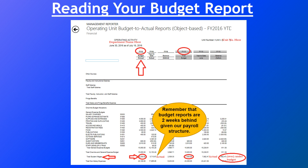Once you click on that link, the Operating Unit Budget to Actual Report comes up. At the bottom, the second to last item is your student wage line — this is your total student wages for the year as well as your actual amount at any given point. The first column is the total budget for the year, and the second column is your actual amount at the time you look at it. Please keep in mind there is a two-week delay on the reporting of student wages due to the payroll structure.